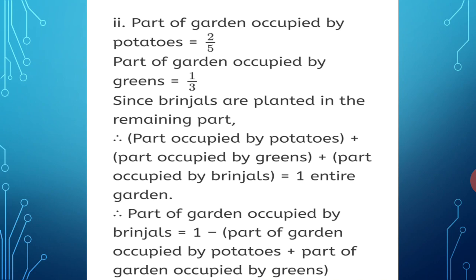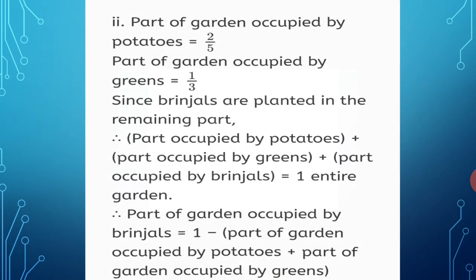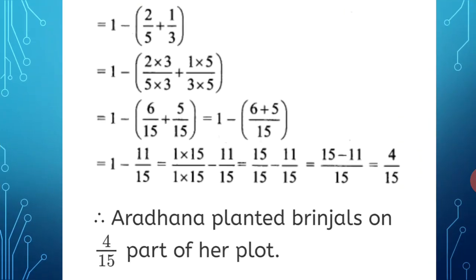So we calculate: 1 minus (2 upon 5 plus 1 upon 3). We need to equalize the denominators in order to add them.